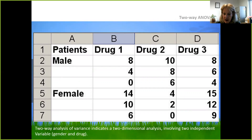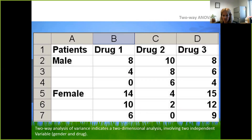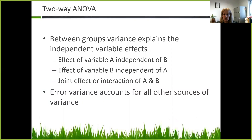One example of this type of design involves patients who are both male and female, given three different drugs. Two-way analysis of variance indicates a two-dimensional analysis involving two independent variables — in this case, gender and drug. The two-way ANOVA looks at between-group variance explaining independent variable effects: the effect of variable A independent of B, the effect of variable B independent of A, and then the joint effect or interaction of A and B. That is calculated along with the error variance, which accounts for all other sources of variance.